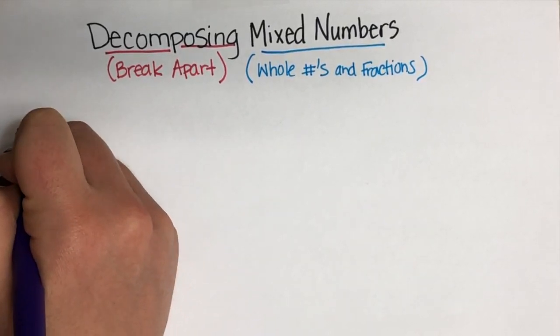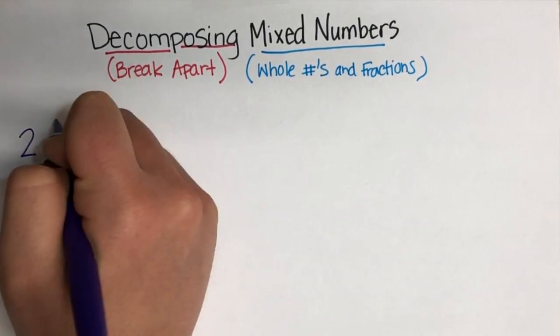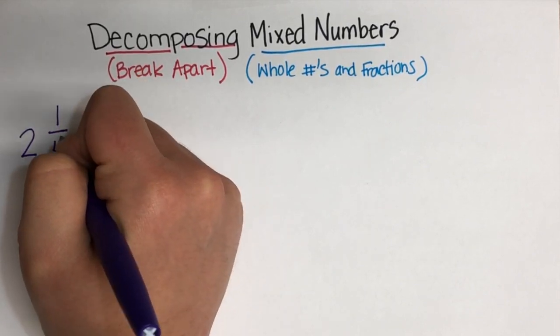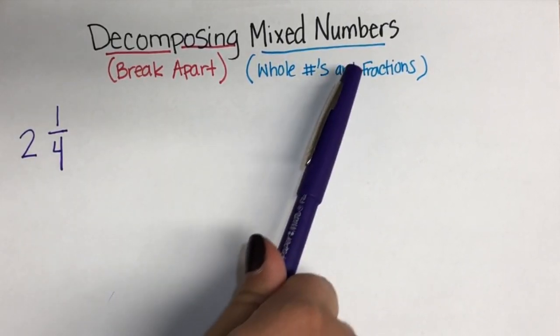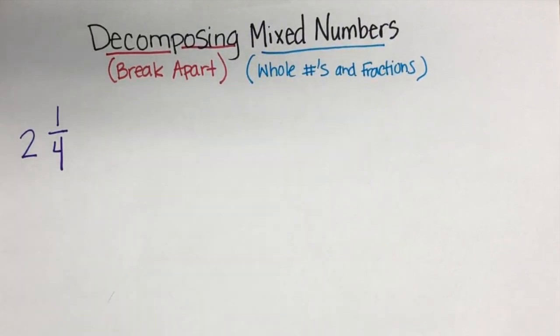Alright, let's begin by looking at one of our examples today, which is 2 and 1/4. This is a mixed number. It has whole numbers and fractions in it.